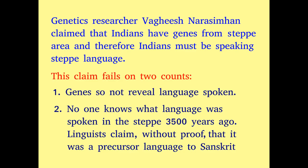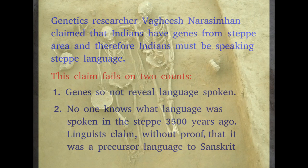Then came along a genetic researcher called Vaghish Narasimhan who compared genes obtained from skeletons in graves in various places with modern genes to conclude that Indians had steppe genes and therefore Indians must be speaking a steppe language. These conclusions failed on two counts even before the study went for final publication. Genes do not reveal language spoken, and genetic studies cannot give proof of language. Worse, no one knows what language was spoken in the steppe area 3,500 years ago; linguists have simply assumed those people spoke a language that was created by linguists themselves and called PIE, or Proto-Indo-European.